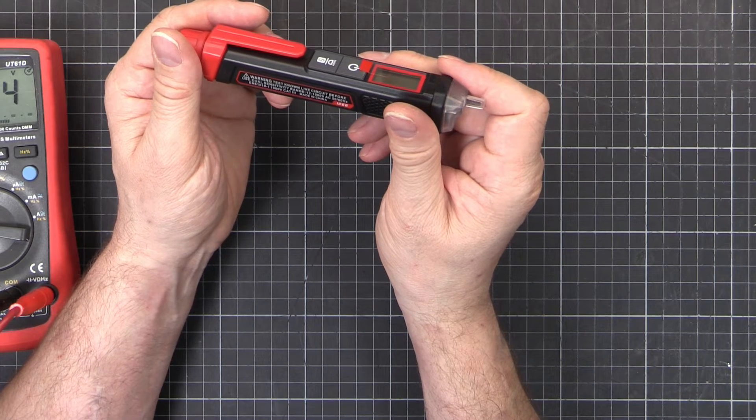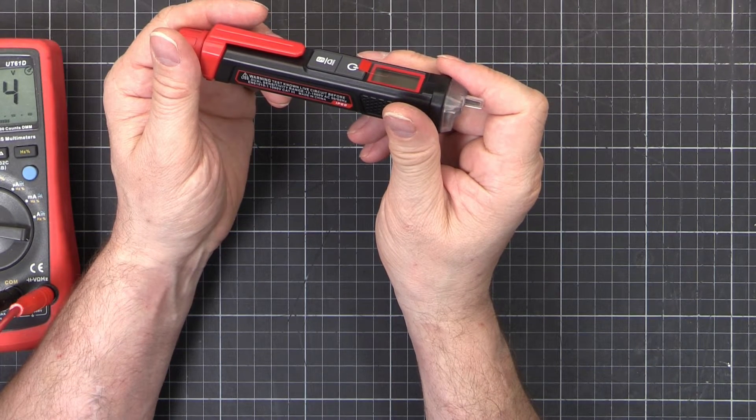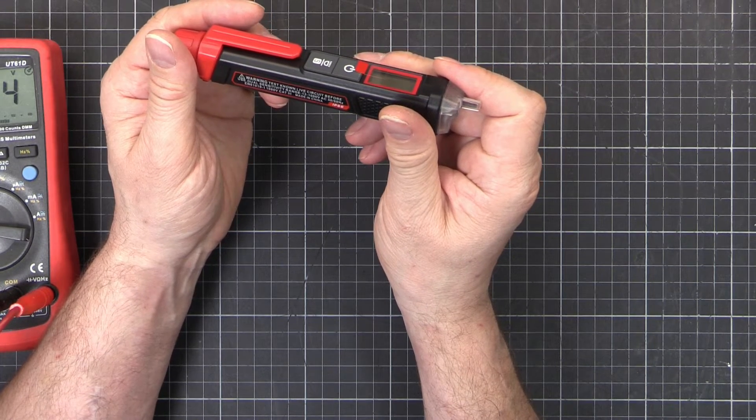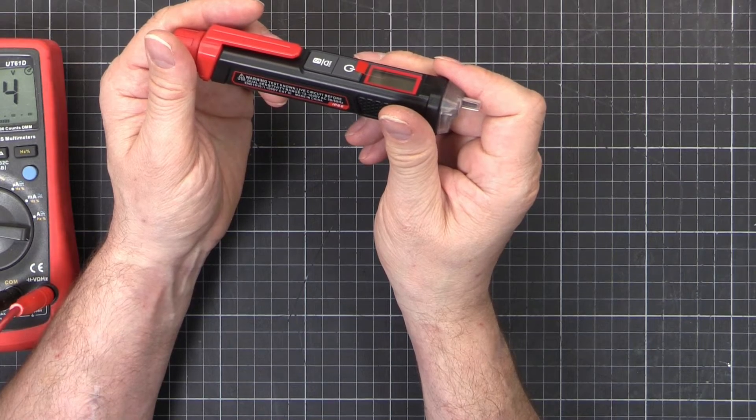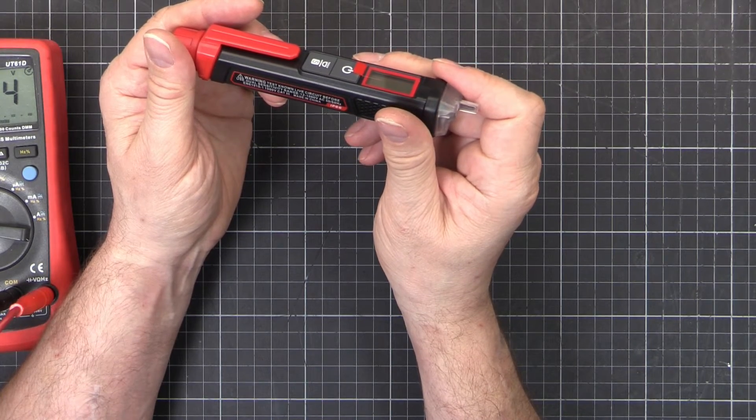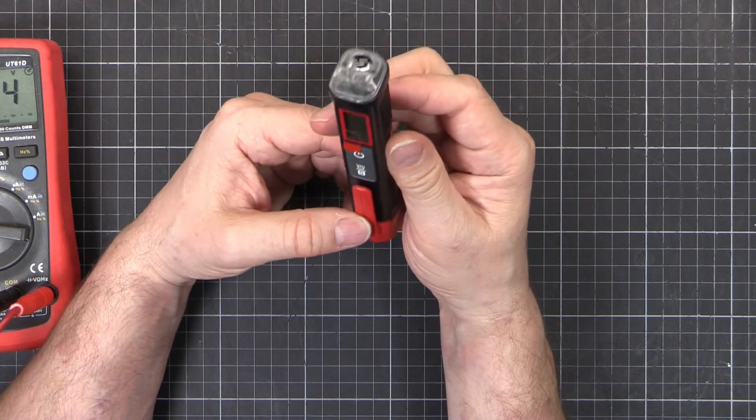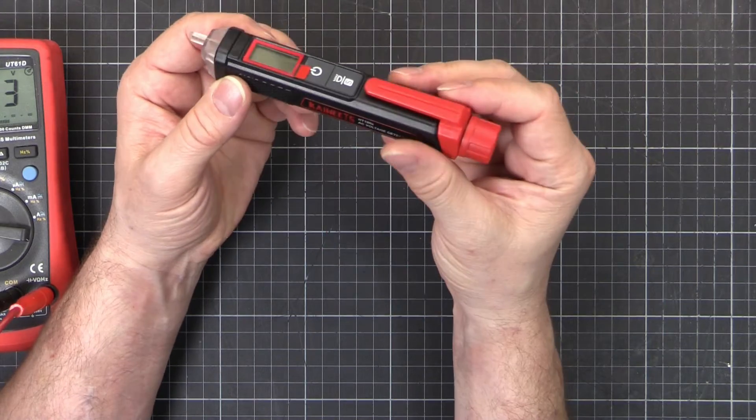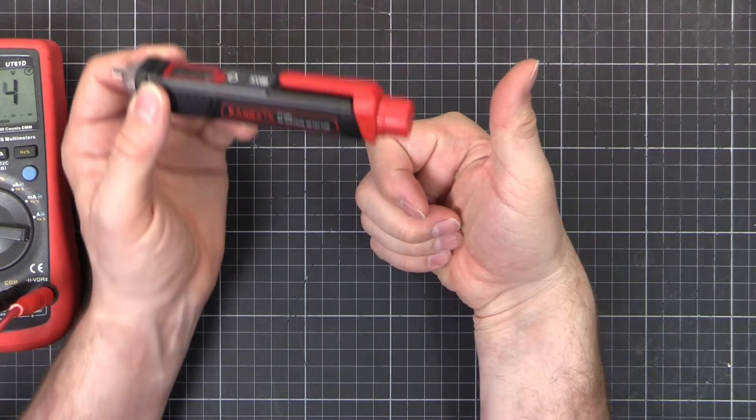Dual sensitivity range, 12 to 1000 volts, 50 to 60 hertz. Cat 3. Not a problem. It's a nice little neat unit. I'm going to give that a thumbs up. It works as advertised.